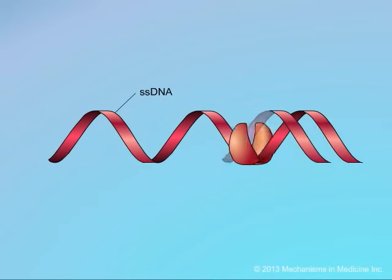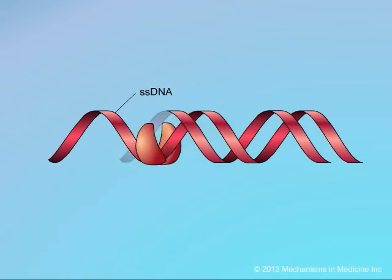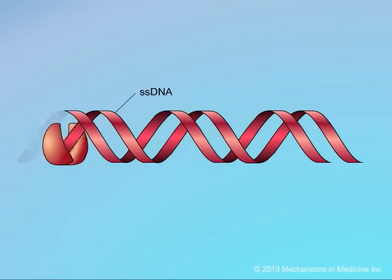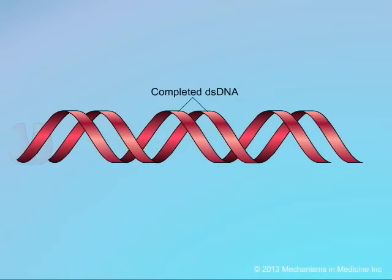It shows the formation of the second strand of viral DNA. As the first DNA strand is completed, it now actually serves as a template on which to copy a second strand of viral DNA. This second strand of viral DNA is actually complementary to the first strand. This is likewise an essential step in viral replication, and this step as well can actually be inhibited by the reverse transcriptase inhibitors.